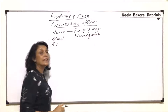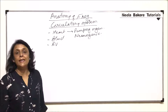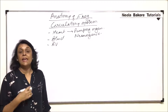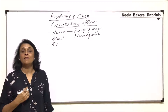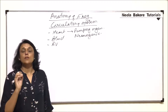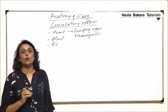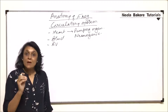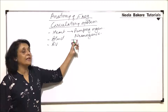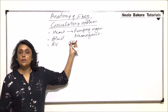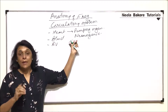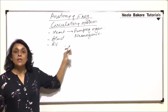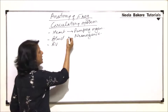Neurogenic means the stimulus for heartbeat arises from the nervous system. In our case, our heart is myogenic because the stimulus for the contraction or the heartbeat develops in a muscle — that is the SA node. But in case of frogs, it is coming from the brain or nervous system, and that is why this heart is known as neurogenic heart.